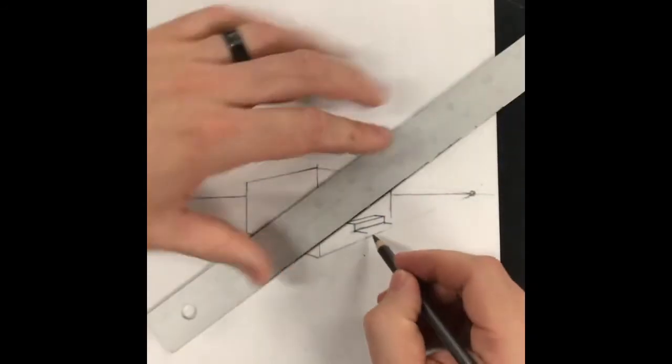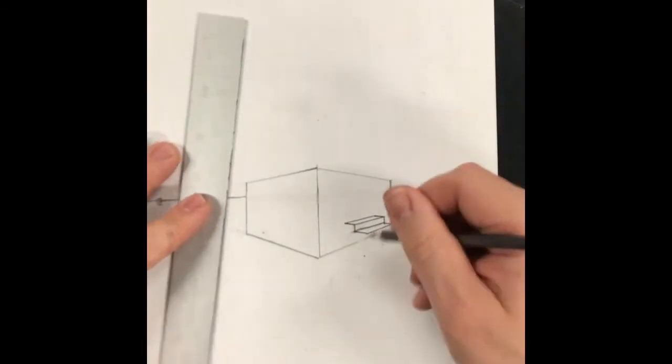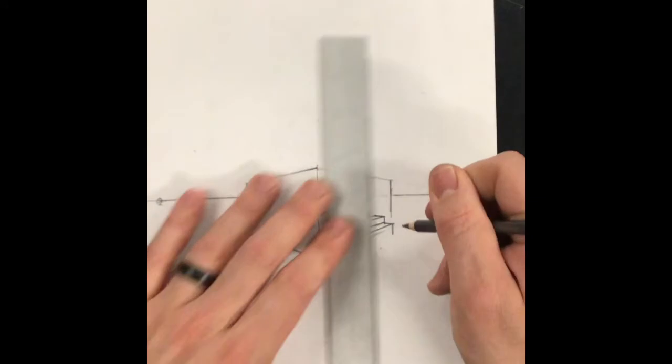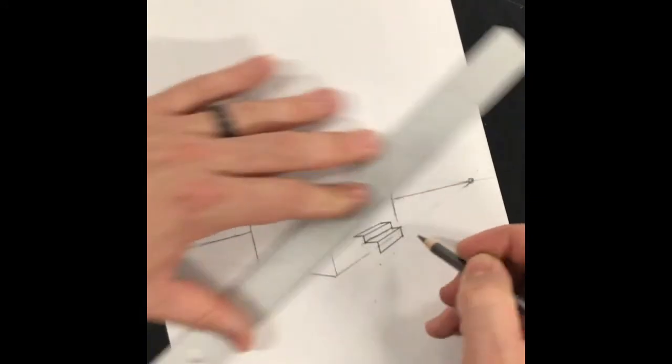Come back over to this side, put the front on. Vertical line, vertical line. Front back on this way, and you get kind of a rhythm going.